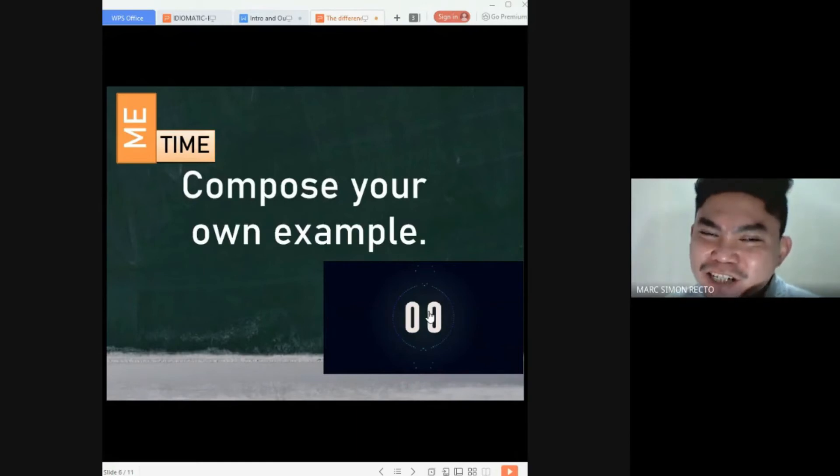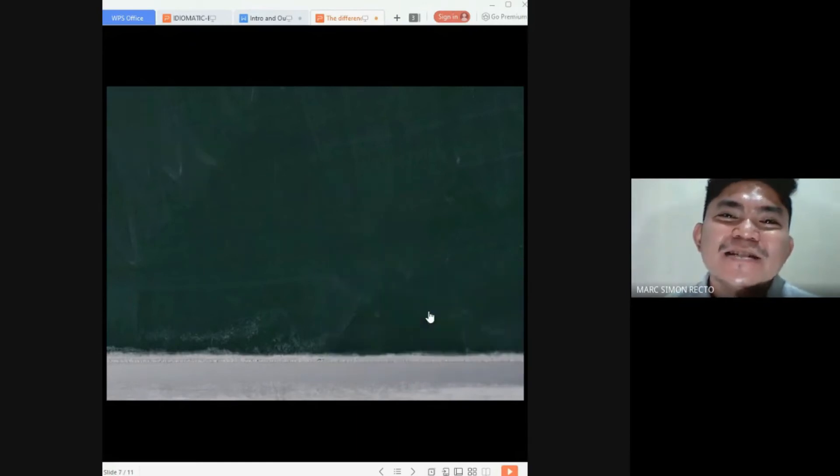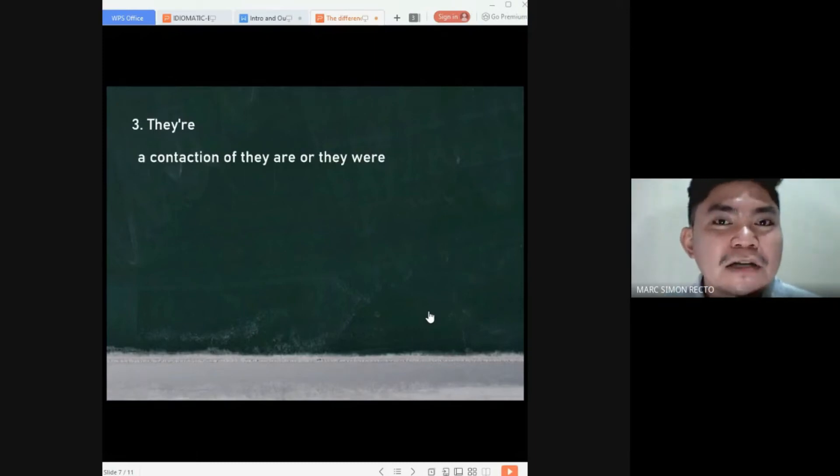Ready? Now, let's have the third word. They are spelled as T-H-E-Y apostrophe R-E. What does it mean? It's a contraction of they are or they were. So, it depends on the tense of the sentence.